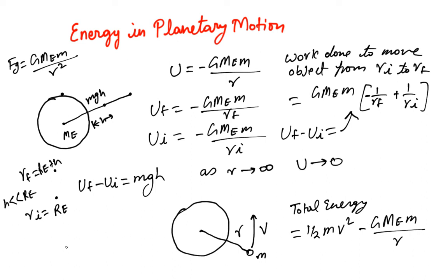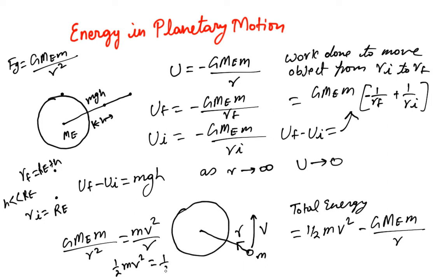The centripetal force of this orbital motion is provided by gravity: GMe*m/r² = mv²/r. From this, (1/2)mv² = (1/2)GMe*m/r. Substituting into the total energy expression, the total energy of the object moving in orbit becomes -GMe*m/(2r).